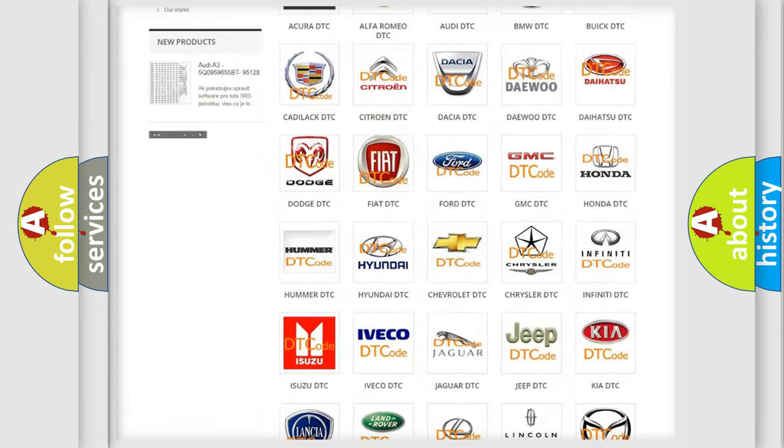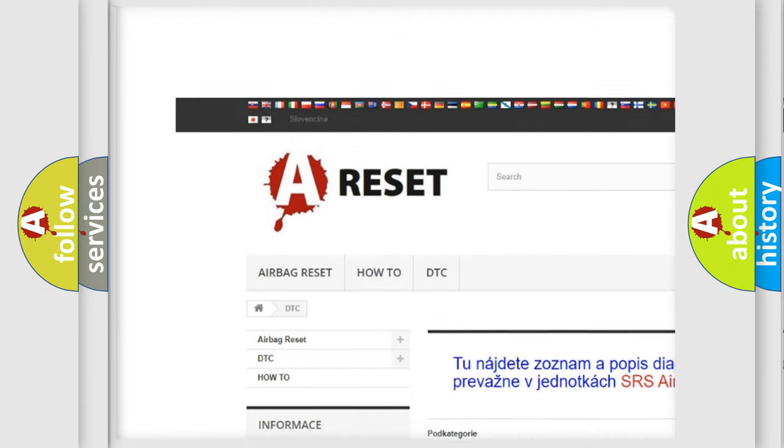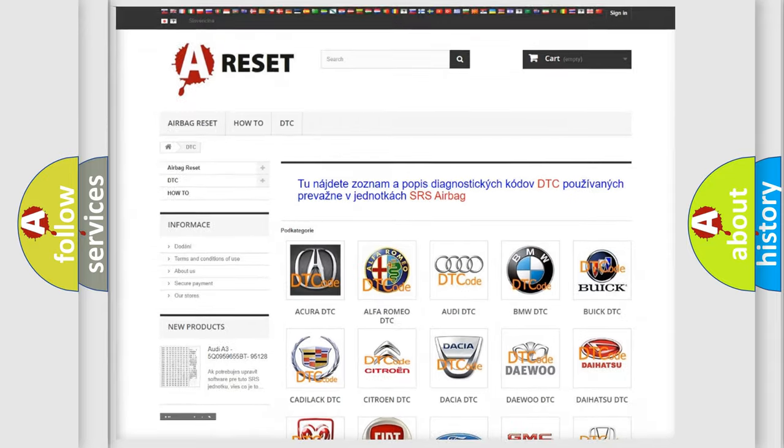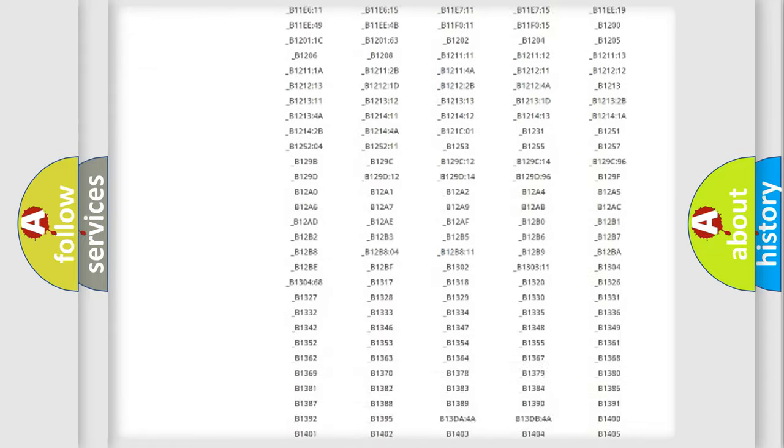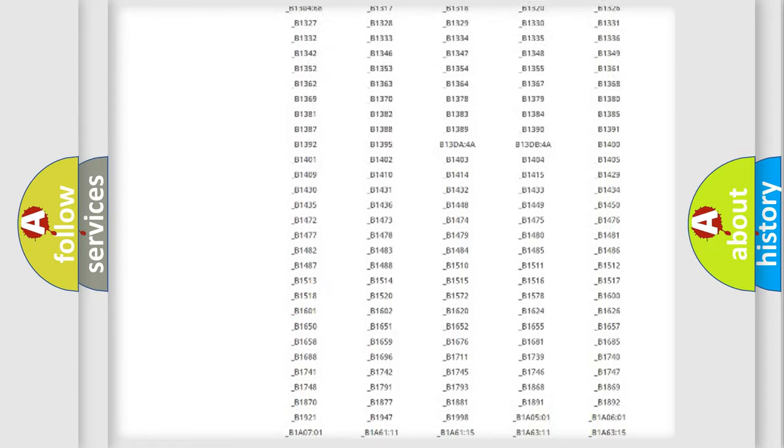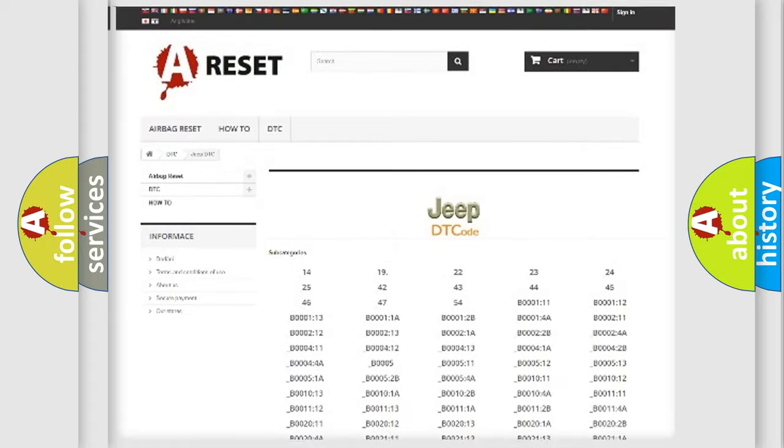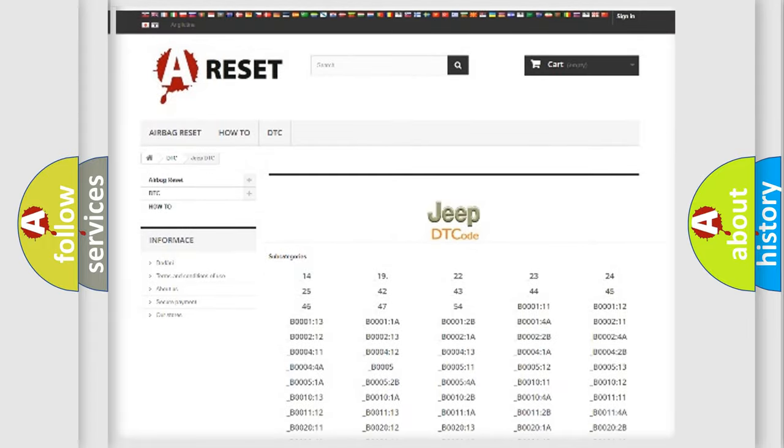Our website airbagreset.sk produces useful videos for you. You do not have to go through the OBD2 protocol anymore to know how to troubleshoot any car breakdown. You will find all the diagnostic codes that can be diagnosed in Jeep vehicles, and also many other useful things.